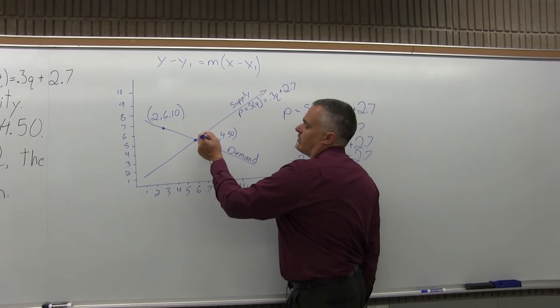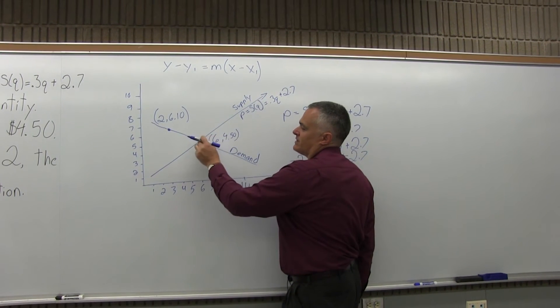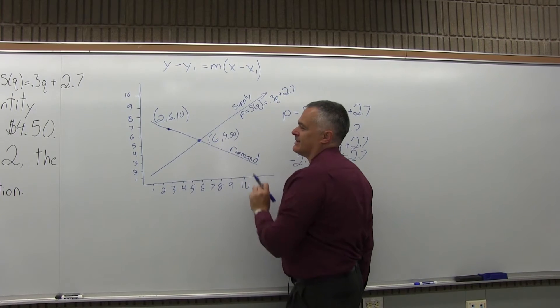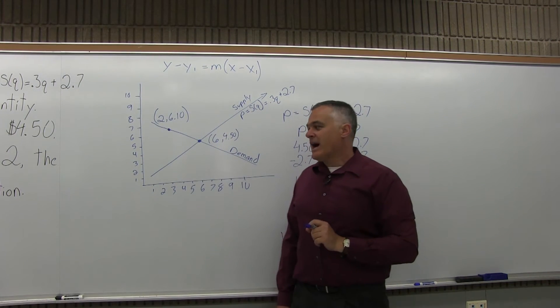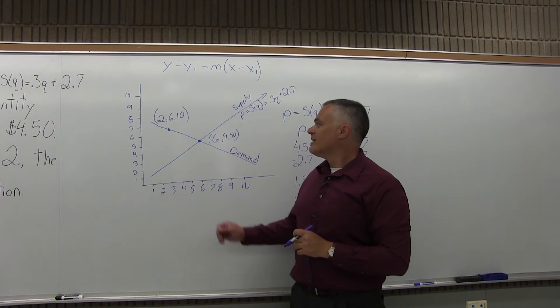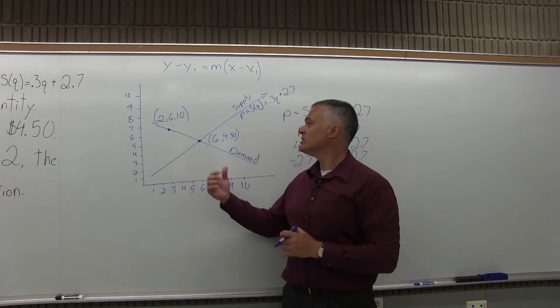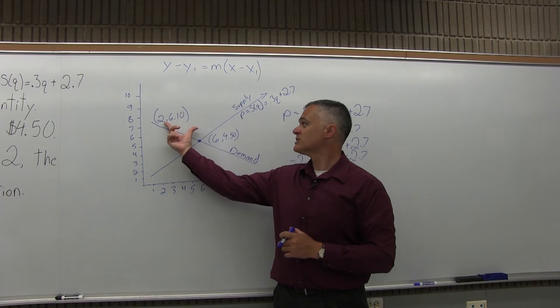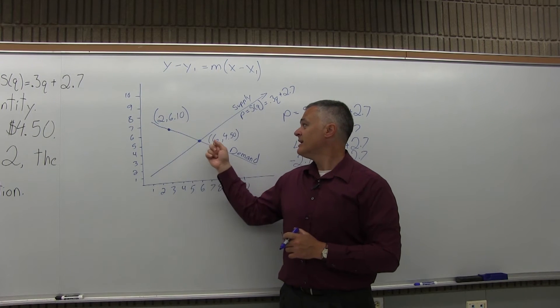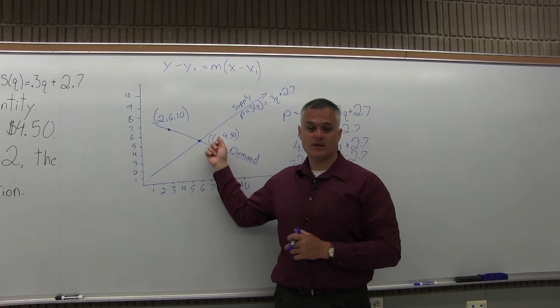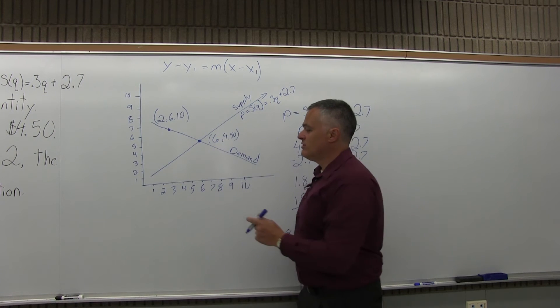After that work, I have basically two points. This problem becomes find the equation of the line that goes through the point (2, 6.10) and (6, 4.50).